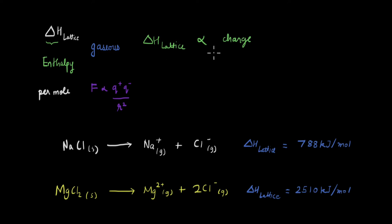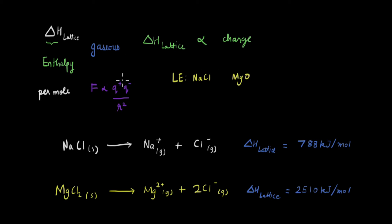We can write that lattice enthalpy is proportional to the charge of the ion — the higher the charge, the greater the lattice enthalpy. Comparing NaCl and MgO, since both have the same crystal structure the arrangement of ions in space is similar, so distance is not a factor here. The electrostatic force is stronger in MgO due to its higher charge magnitude, so the lattice enthalpy of MgO will be higher than that of NaCl.